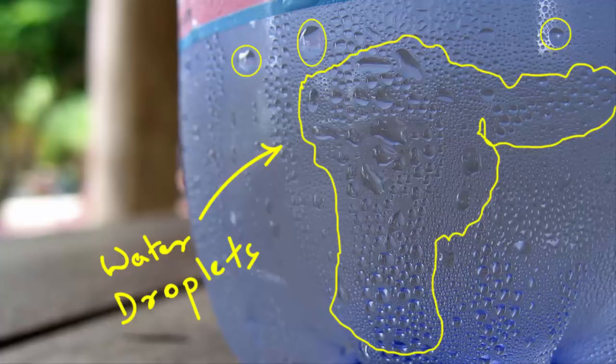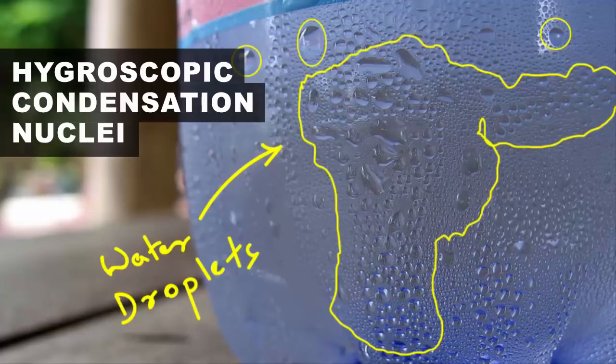Now the next interesting question to think about is, what is inside of this water droplet? Or in other words, what is holding the water together in the shape of a drop? Now the answer to that question is, it is because of hygroscopic condensation nuclei. I know it's a big term, but it is fairly easy to understand.